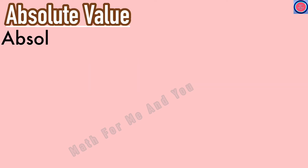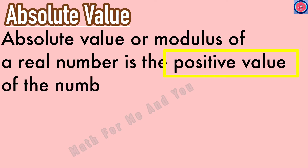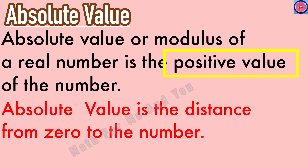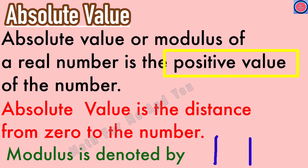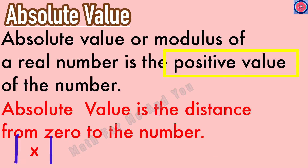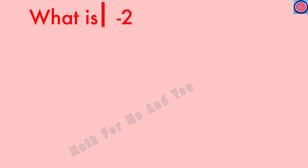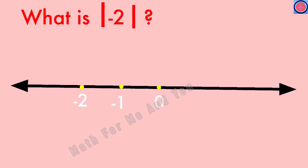Absolute value or modulus of a real number is the positive value of the number. In other words, the modulus or absolute value is the distance from zero to the number. Modulus is denoted by the symbol — for example, if we write x in between these two lines, we read this as absolute value of x or modulus of x.